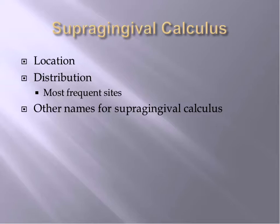Calculus can also form on surfaces of dentures, dental prostheses, as well as tongue piercing barbells. Think about where the salivary glands are and where the ducts are — those are the primary places for supragingival calculus, but they can really form anywhere.